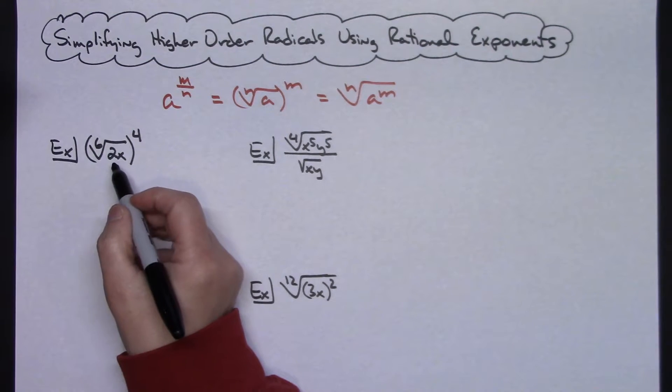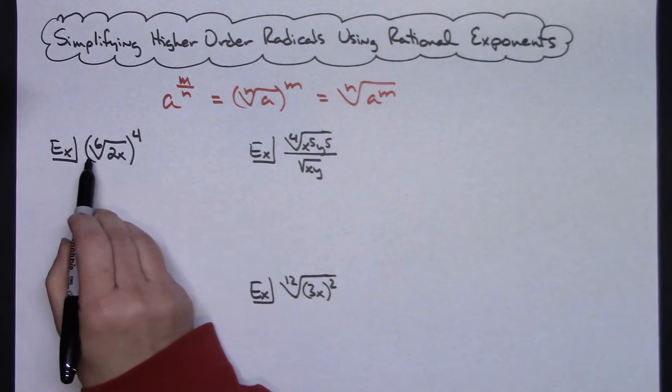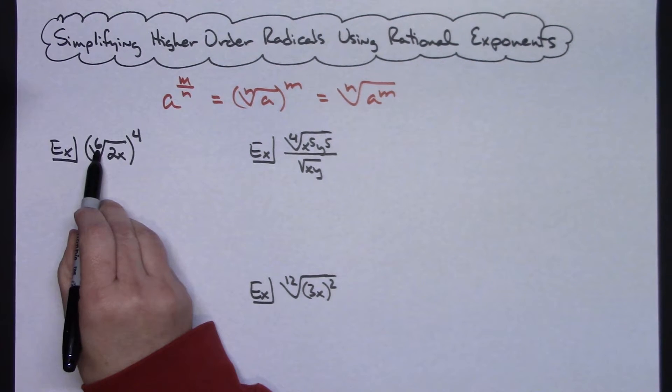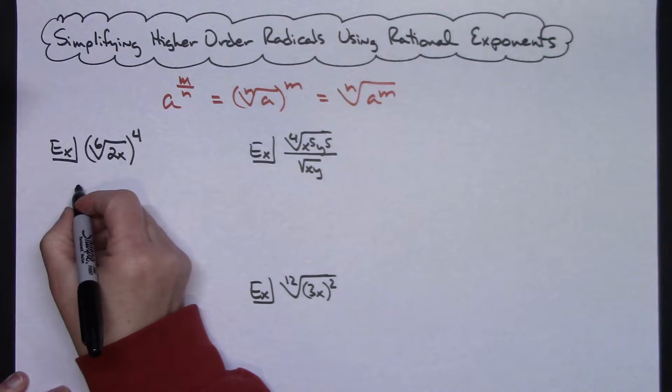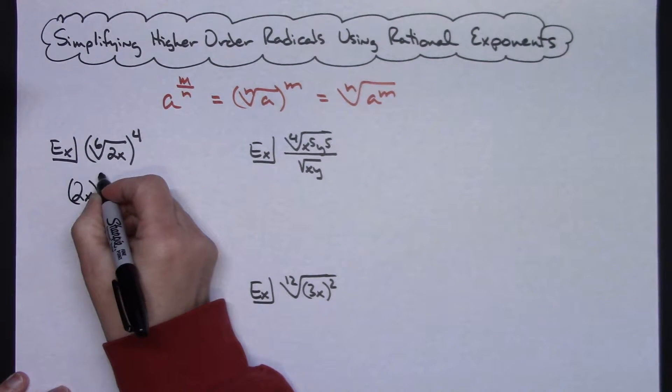So the first thing I want to do is write this as a rational exponent. So that sixth root will be my denominator when I do that. So then I would have 2x raised to the 4/6.